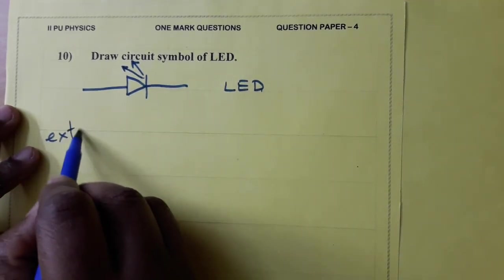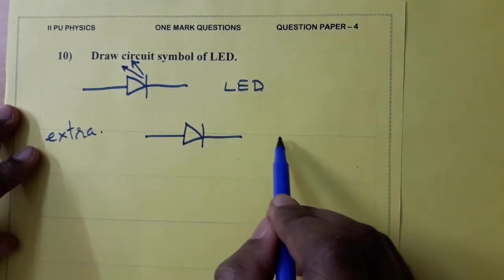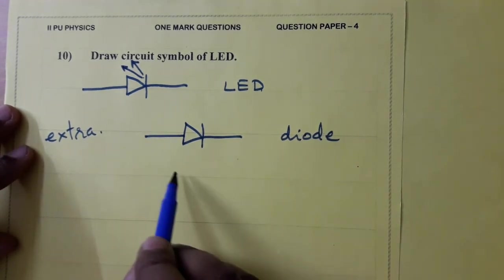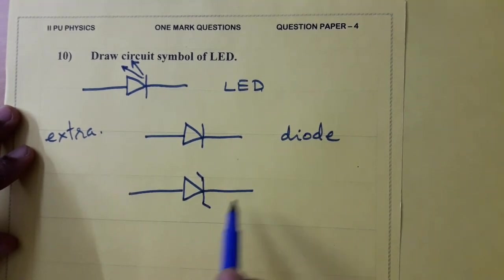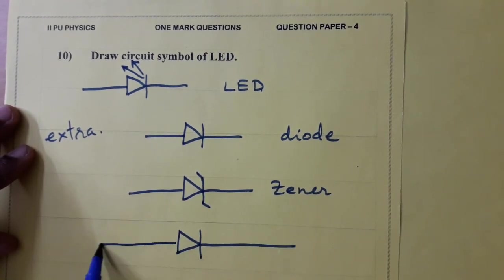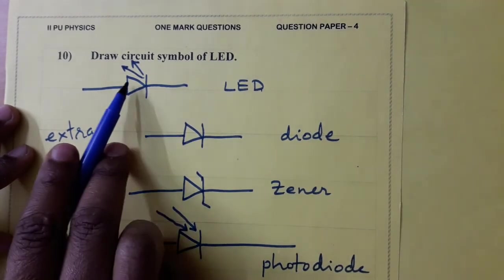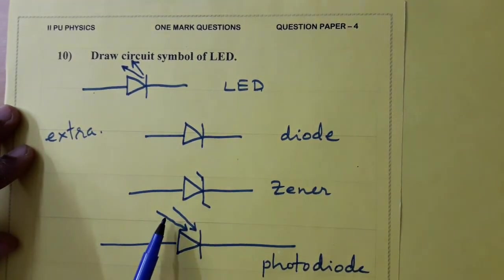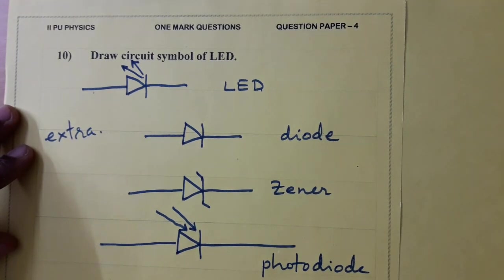Extra, for diode, this is the symbol. P-N junction diode. Next, Zener diode. Photodiode. Using light, electrical energy is obtained. So, this is photodiode. In LED, electrical is converted into light. In photodiode, light is converted into electrical. This is diode - triangle with vertical line. Zener diode. Photodiode.